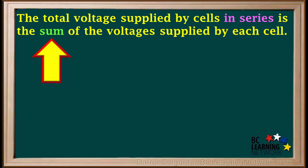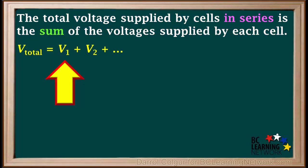The rule is: the total voltage supplied by a battery of cells in series is the sum of the voltages supplied by each cell. The equation we can use is V_total equals V1 plus V2, etc. The voltage of each cell is added up.